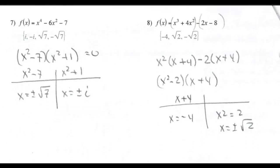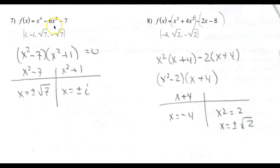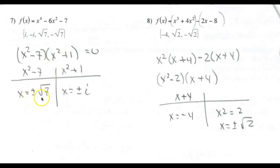Let's solve two more. Here's another one you can factor using the quadratic form. Factors of minus 7 that add up to minus 6 are minus 7 and plus 1, so this factors as (x² - 7)(x² + 1). Setting each equal to 0 gives x = ±√7 for the first factor, and x = ±i for the second.